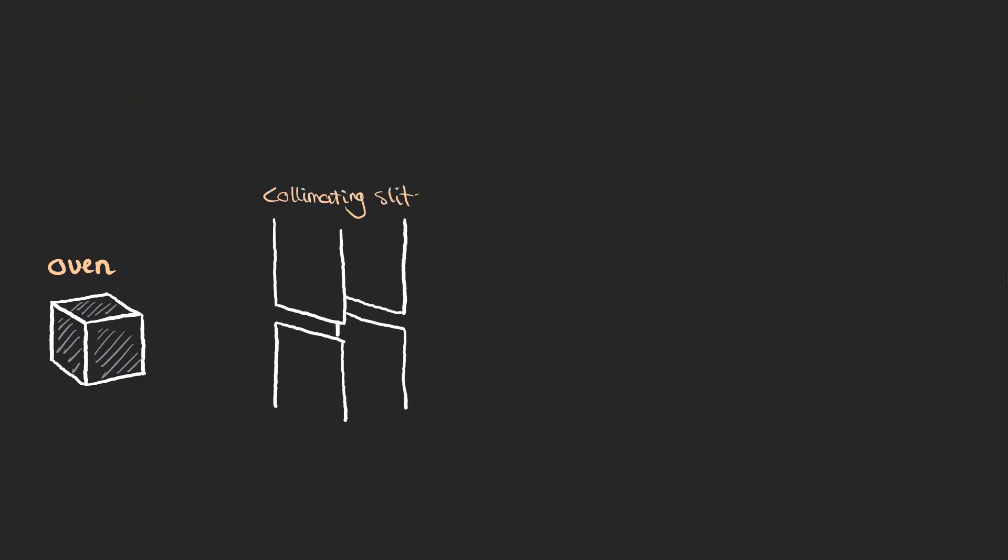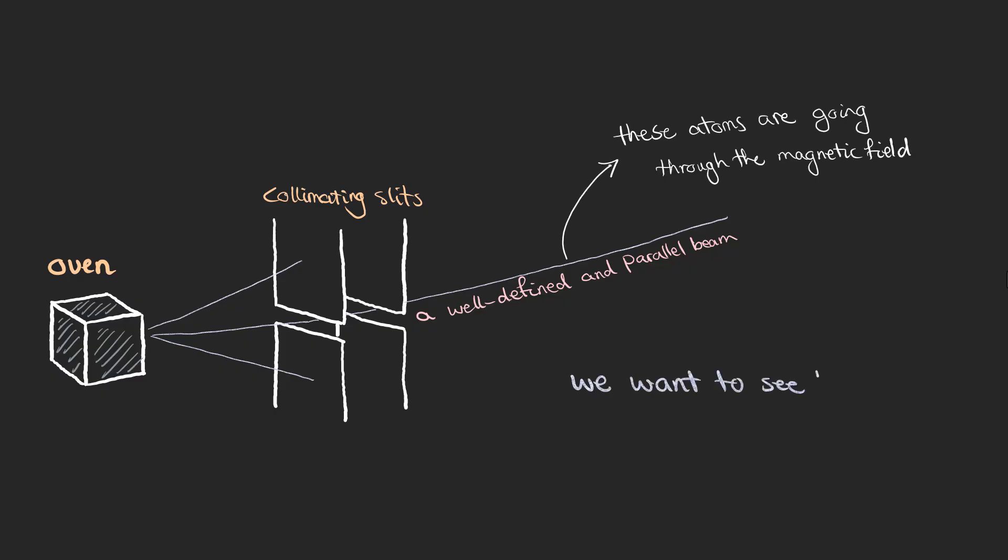These are collimating slits which are narrow openings or apertures that are used to shape and align a beam of particles, in this case silver atoms. They ensure that the atoms travel in a well-defined narrow path which is essential for the precision of our experiment. By narrowing the beam the slits help reduce the number of atoms that scatter or travel in unintended directions and this minimizes the background noise and ensures that the detected signal corresponds only to atoms that have passed through the magnetic field.